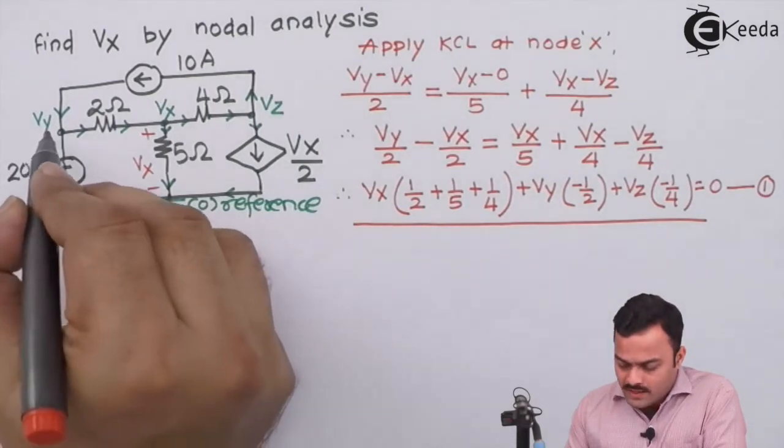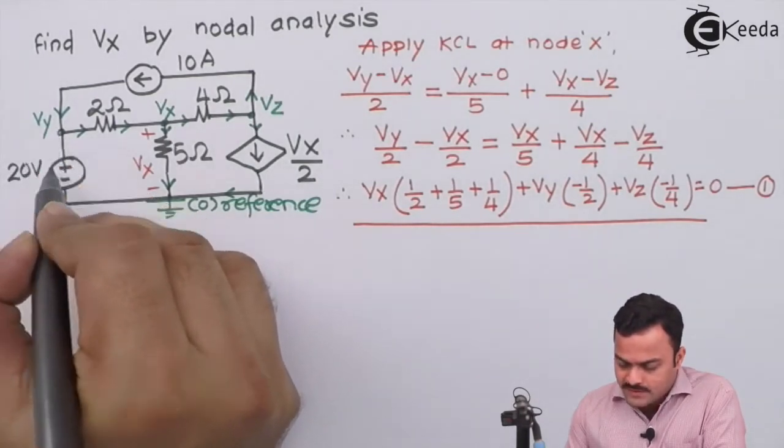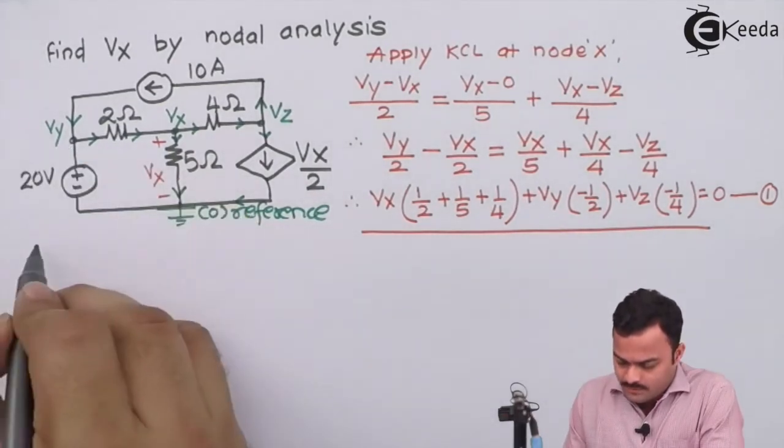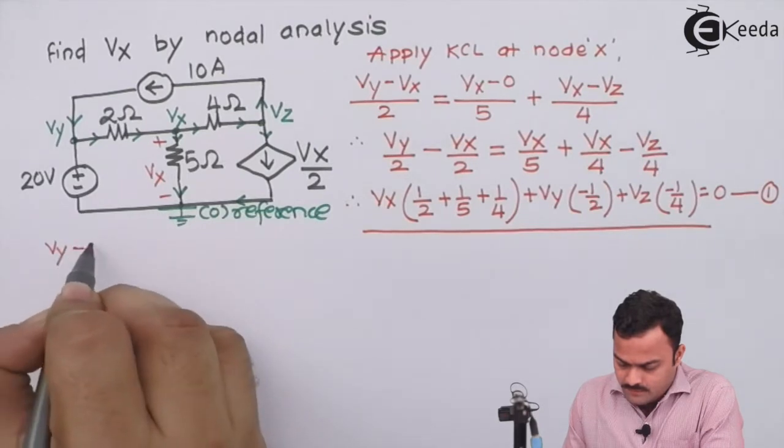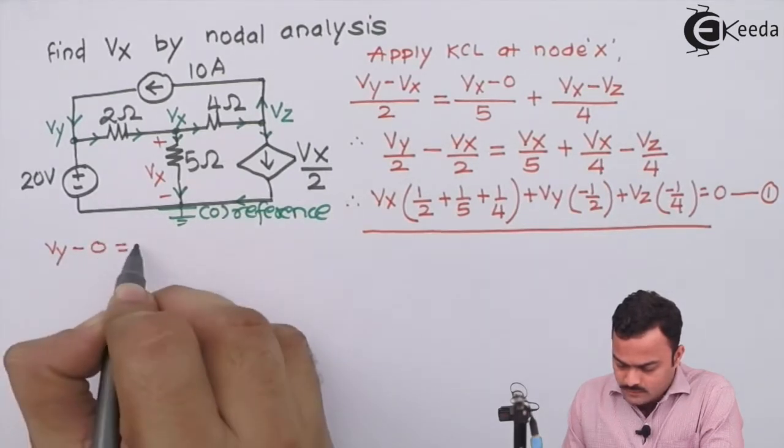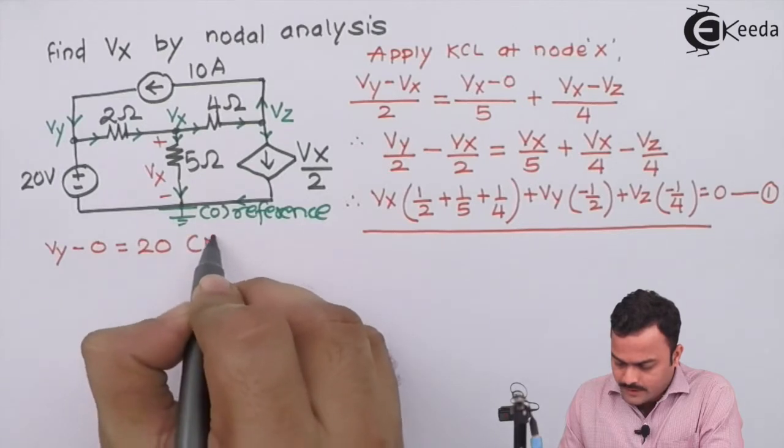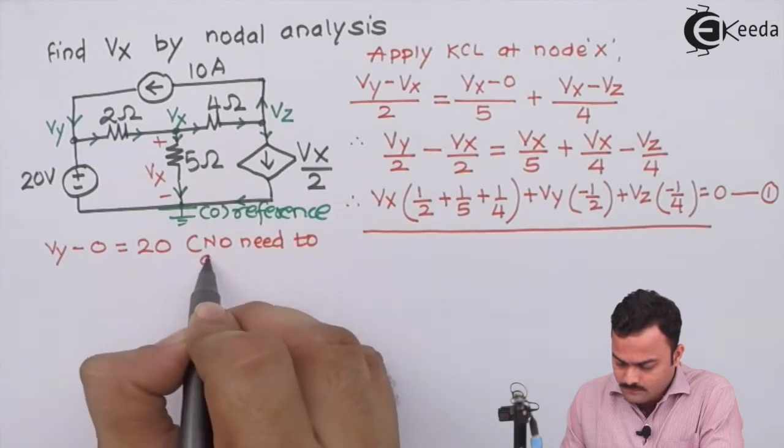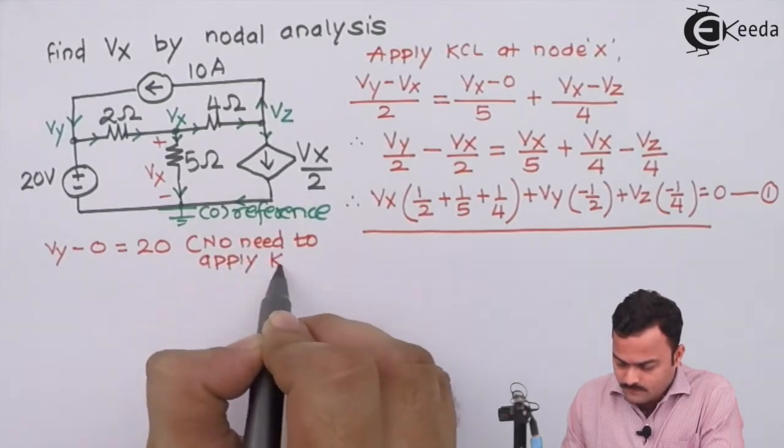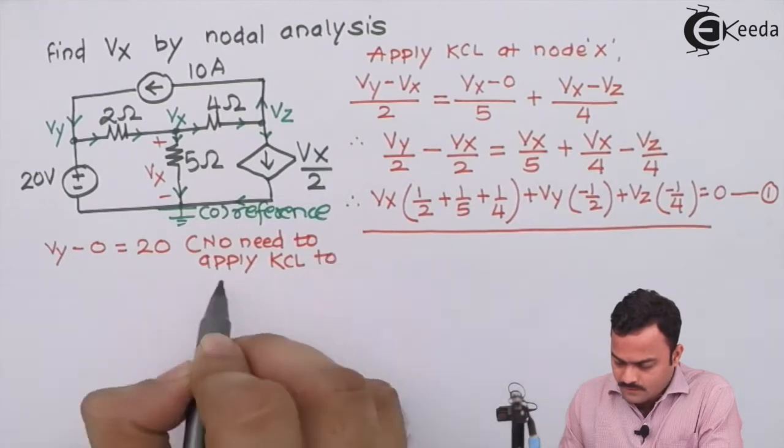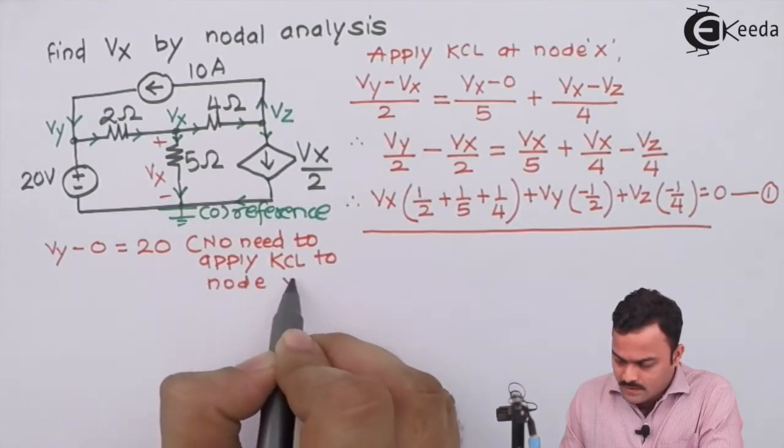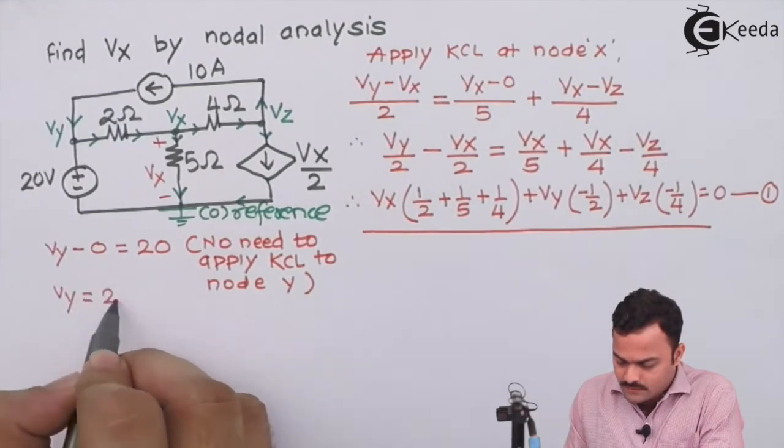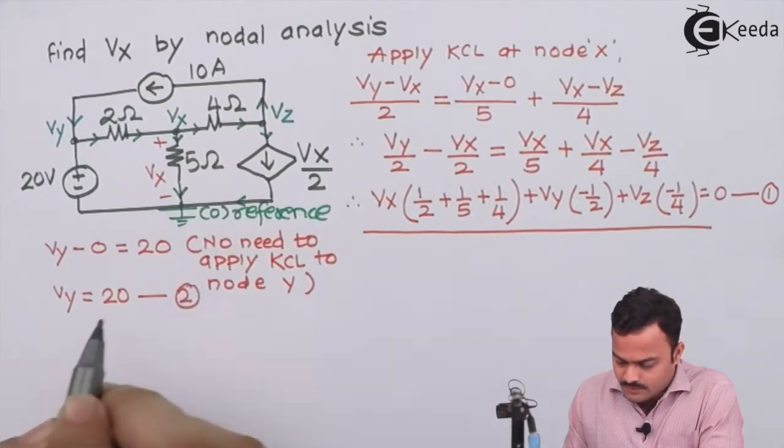So this is equation number 1 simply we are getting after applying KCL at node X. No need to apply KCL at node Y because there is a voltage source between node Y and reference, so I can say Vy minus 0 equal to 20. No need to apply KCL to node Y because only voltage source is present.